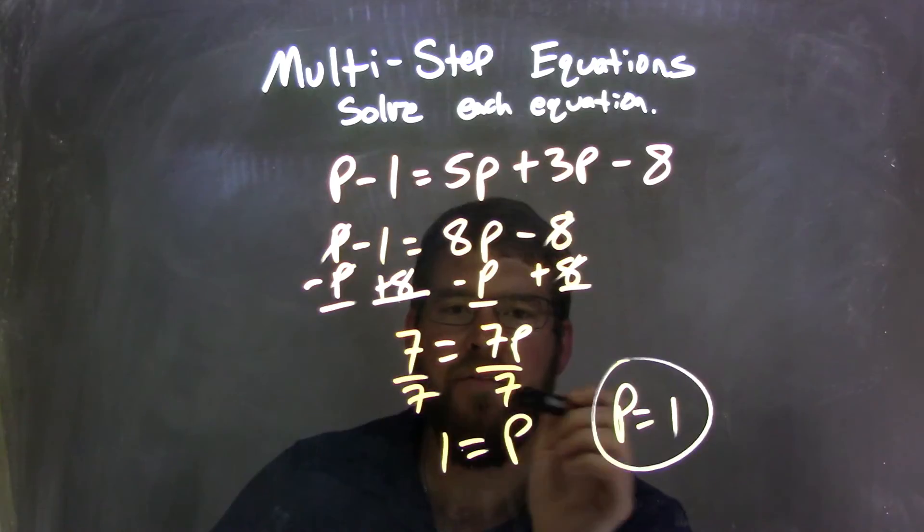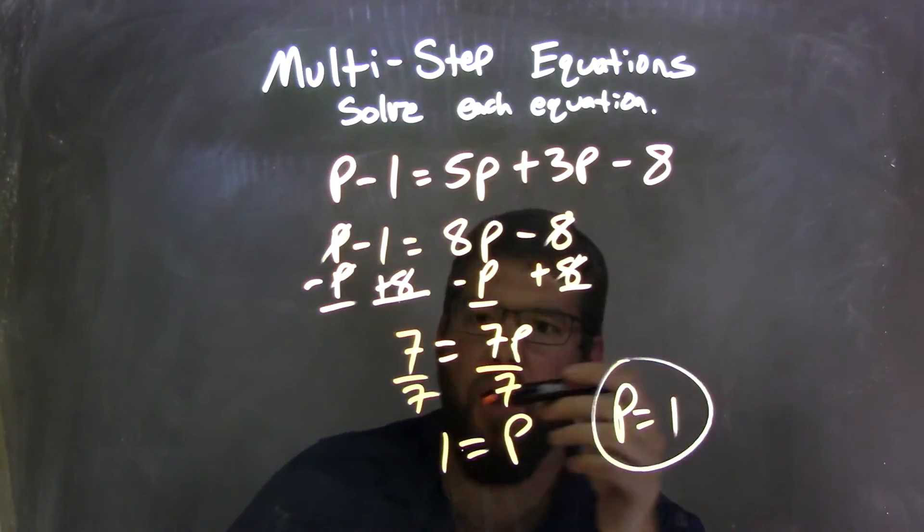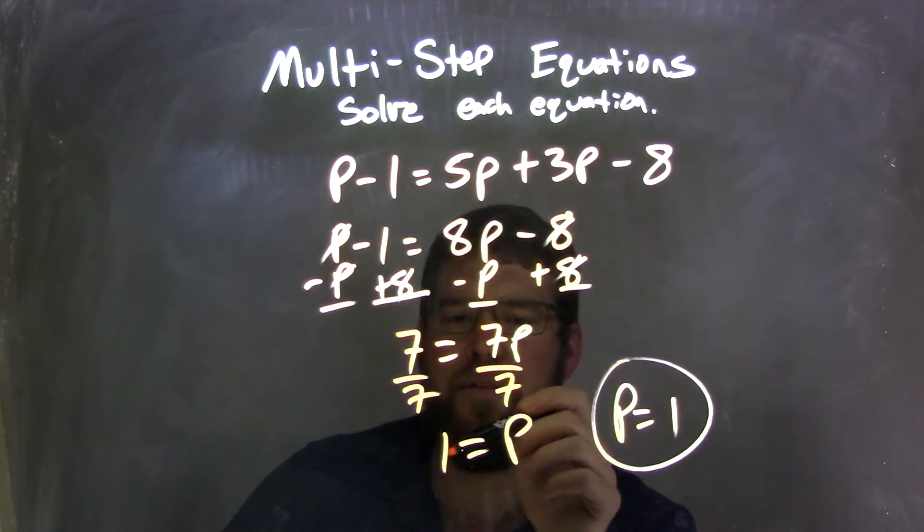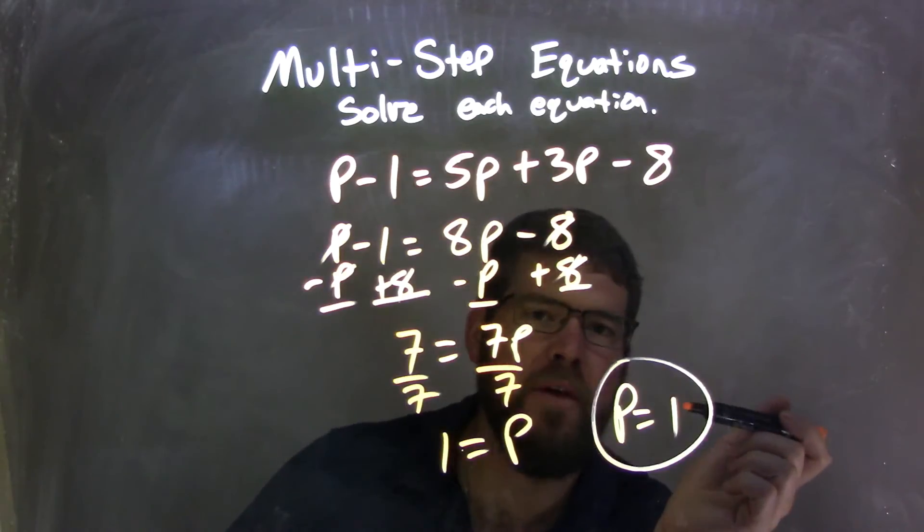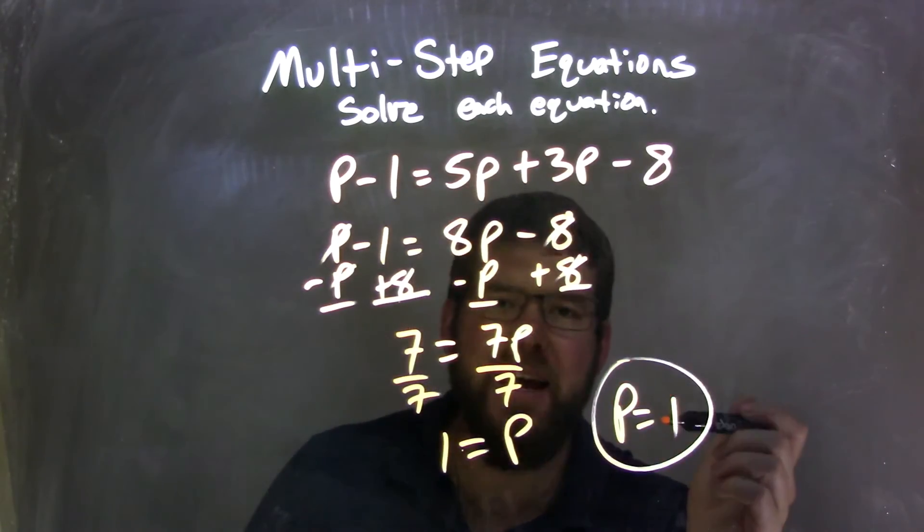Then, divided by 7 to both sides here, opposite of that multiplication, I'm left with p on the right, and 7 divided by 7, any number divided by itself is just 1. So 7 divided by 7 is 1. And then I rewrote this, have p come first, to give me my final answer of p equals 1.